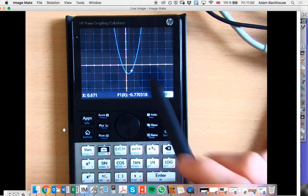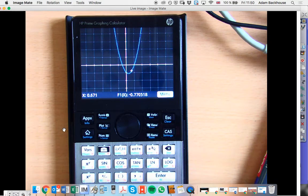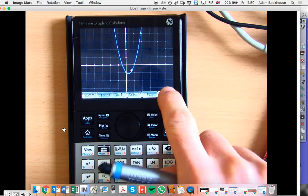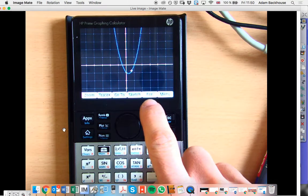To find our vertex, whether it is a minimum or a maximum, we do the same thing. We click on menu, and then FCN.